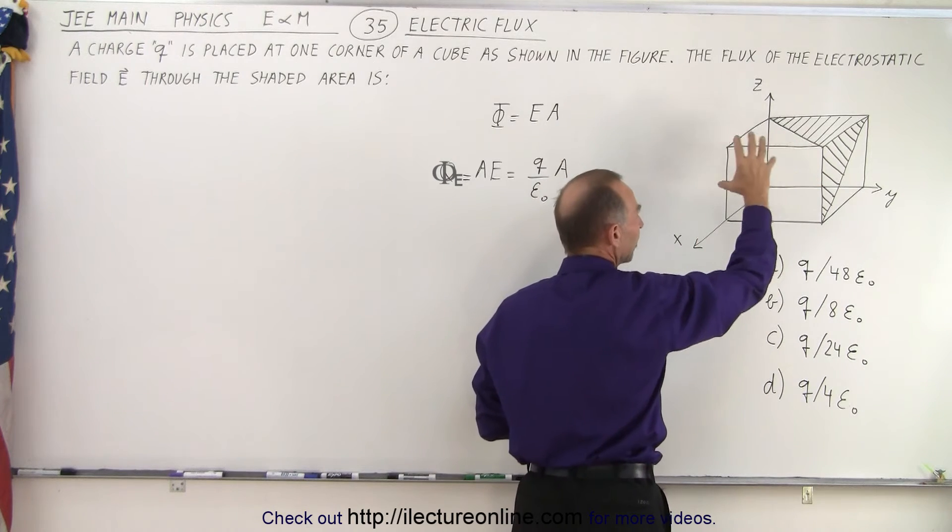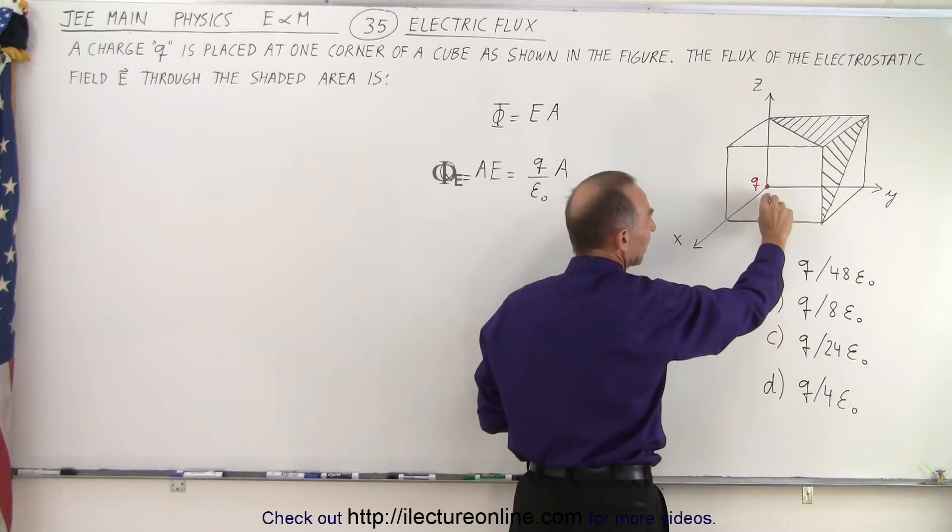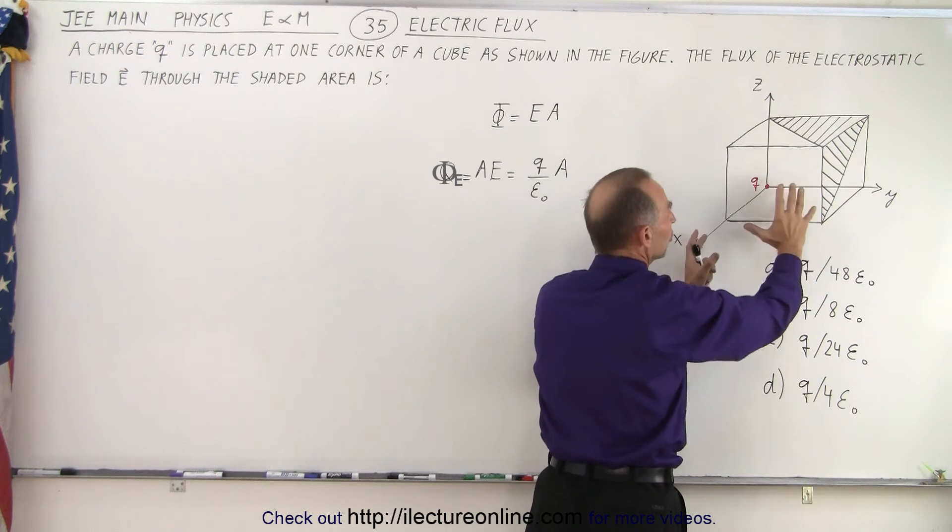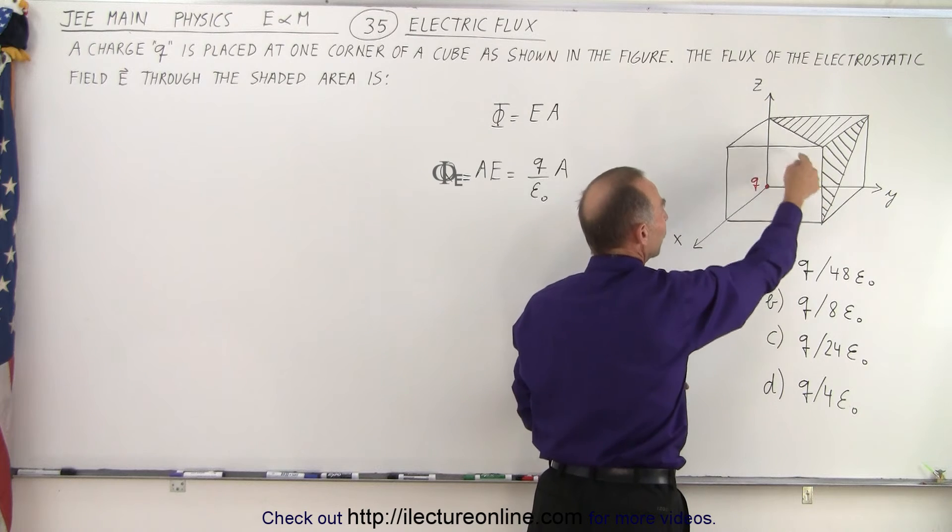So, first of all, the fact that there's one out of eight cubes that only takes part of the flux, the flux goes into all the other directions as well, not through the cube, then we know that we already have one eighth of that.